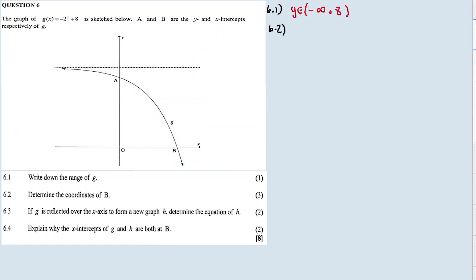Okay, 6.2, determine the coordinates of B as well as A. Now, this is the Y intercept, and then this is the X intercept. So in other words, we have to find the X intercept of this equation or of this graph, which is our coordinates of B. So 6.2, for the X intercept, we let Y to be equal to 0. So let G of X equal to 0, so it's going to be 0 equal to minus 2 raised to exponent X plus 8. And then we solve for X.